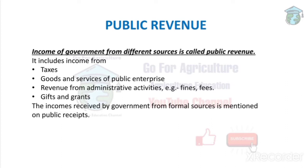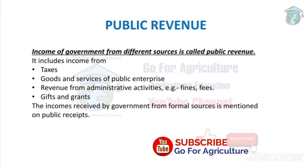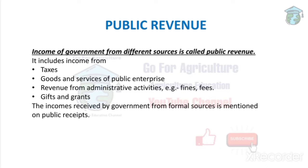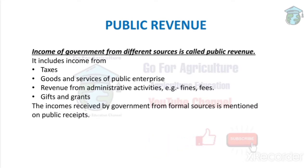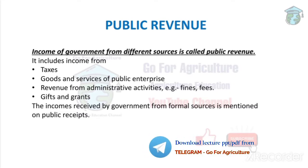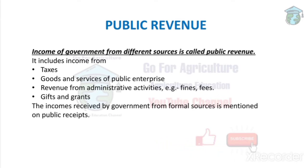Public revenue is the income of the government from different sources. If the government gets money from some sources — like taxes, fines, fees such as passport fees or license fees, or government schemes in which we pay money — these are the sources through which the government gets its income, and this is called public revenue.